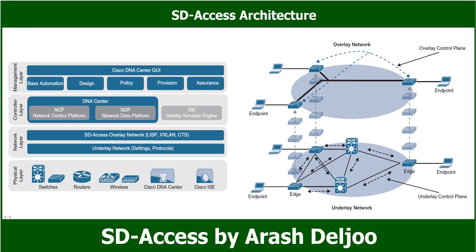The Cisco SD Access fabric is based on multiple existing technologies. The combination of these technologies and automated management provided by Cisco DNA Center makes SD Access powerful and unique. There are three basic planes of operation in the SD Access fabric: the control plane, based on LISP — Locator ID Separation Protocol; the data plane, based on VXLAN — Virtual Extensible LAN; and the policy plane, based on Cisco TrustSec.